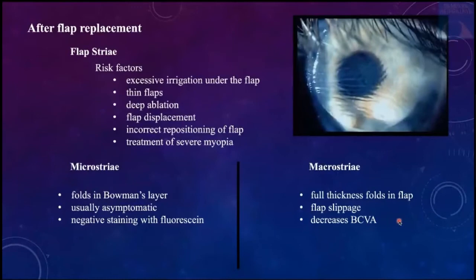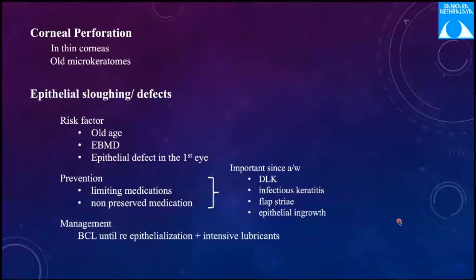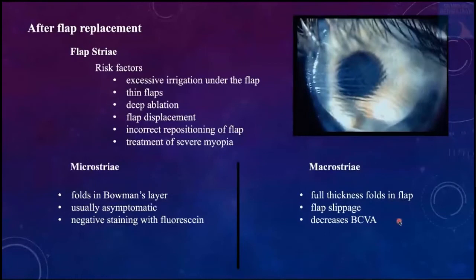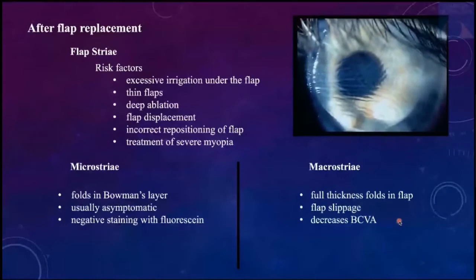Flap striae risk factors include excessive irrigation under the flap (causing edema and mismatch), extremely thin flaps, and deeper ablation resulting in mismatch of the flap to the neo-bed. A very important caution is the judicious use of topical anesthetics during the procedure — excessive use, especially by an apprehensive young surgeon, will loosen the epithelium and lead to many complications. Topical anesthetic should be applied just before the procedure when everything else is ready, not much earlier.